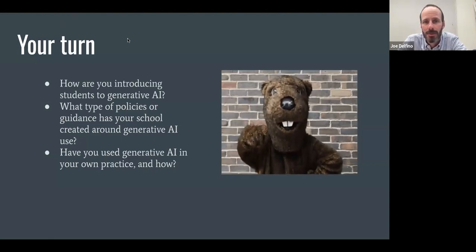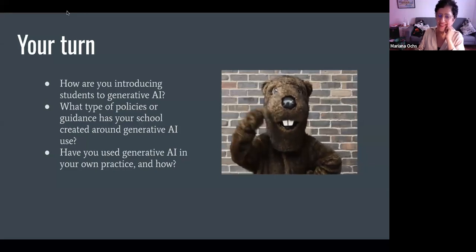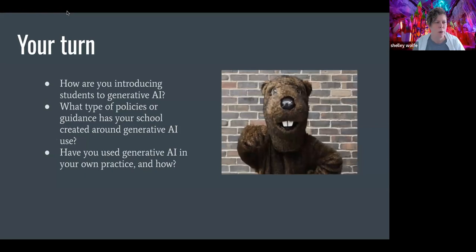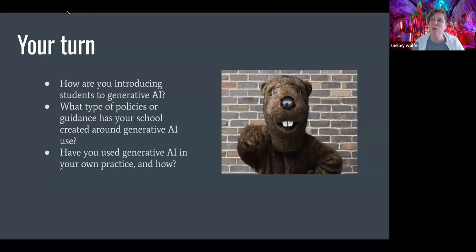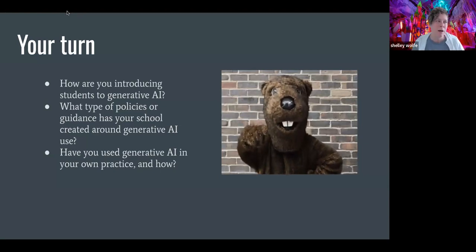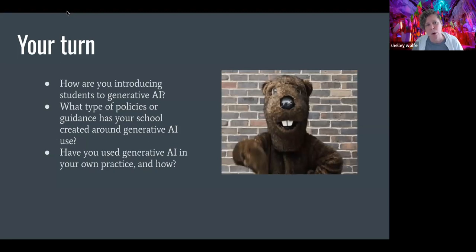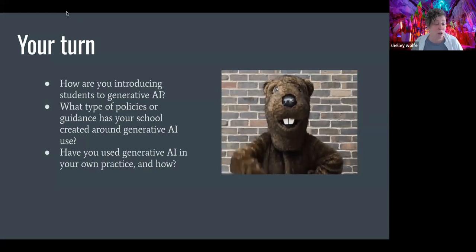Another participant jumped in: 'Going back to algorithmic literacy — we have a school district that, as soon as ChatGPT became the hot thing, instantly said no one can use it, AI is out of the question. Yet we have leadership encouraging us to use it, and our IT department saying no one has access. From a school district standpoint, did you have any pushback? Do you have any recommendations for getting around that?'